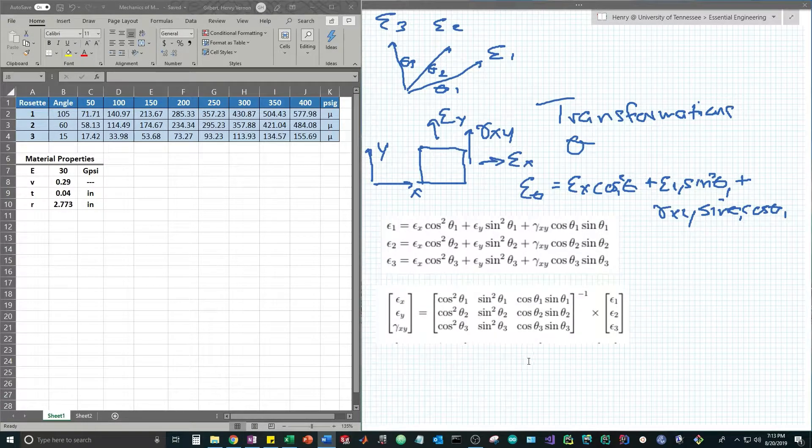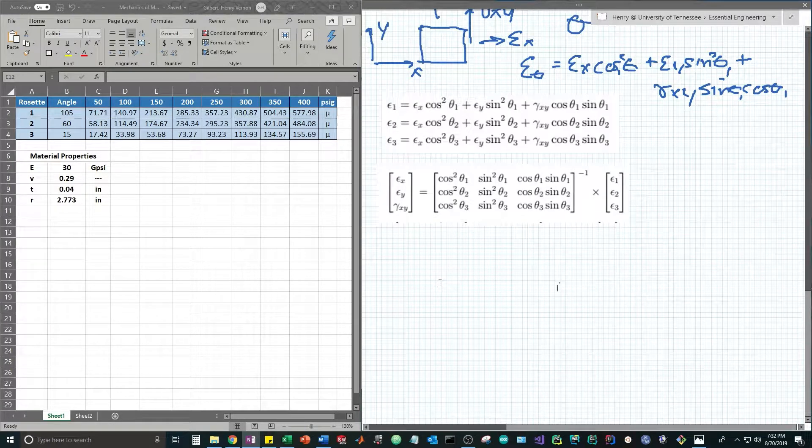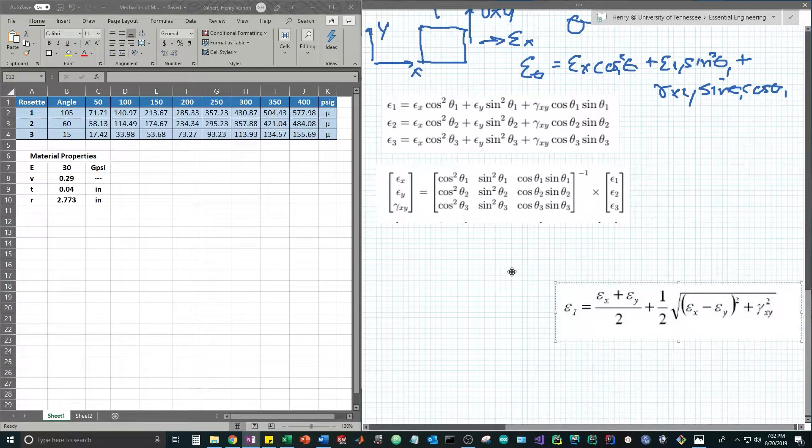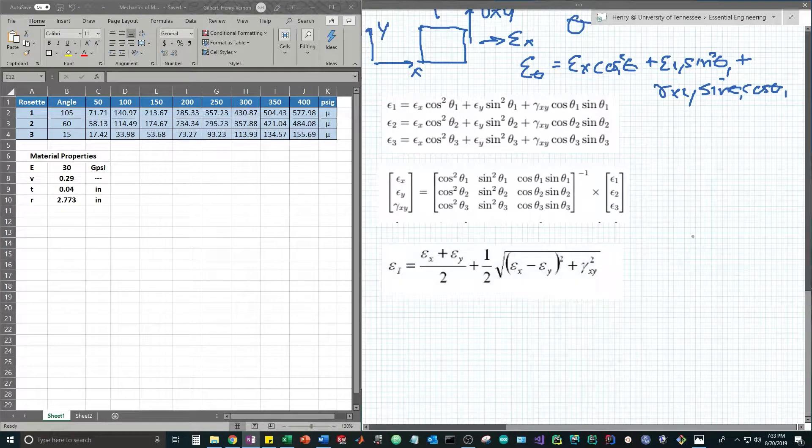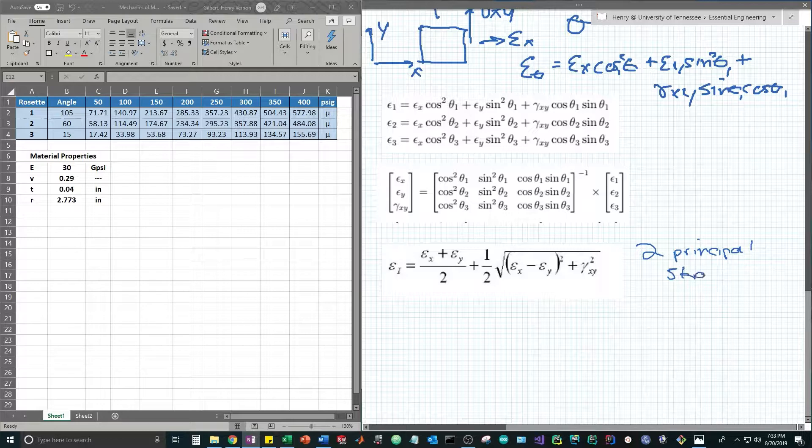Once we have the normal strain values, we're going to calculate the principal strains by using Mohr's circle. This equation states that two principal strains can be solved if we know the plane strains and shear strain. This only gives the equation for one principal strain but this equation is just plus or minus.